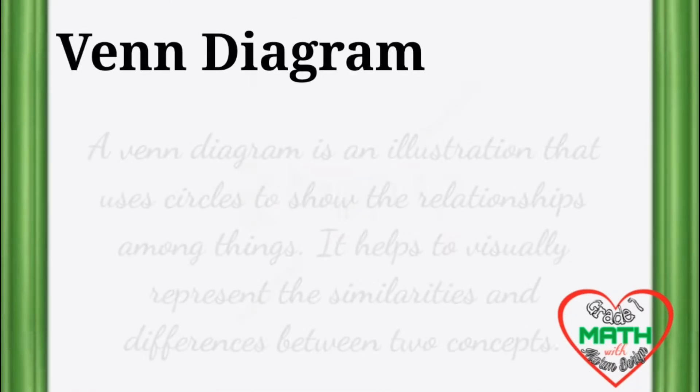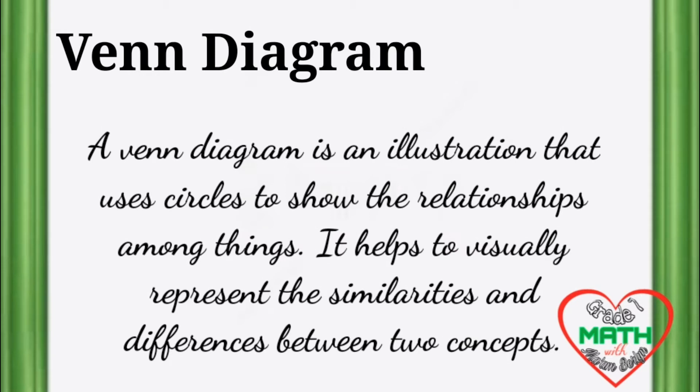A Venn diagram is an illustration that uses circles to show the relationships among things. It helps to visually represent the similarities and differences between two concepts.